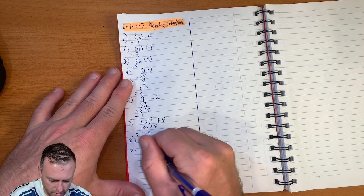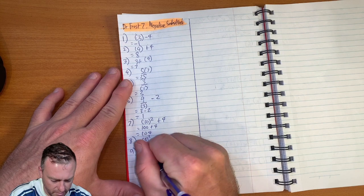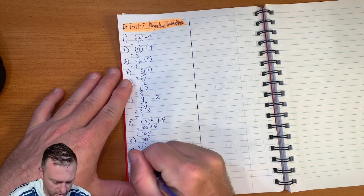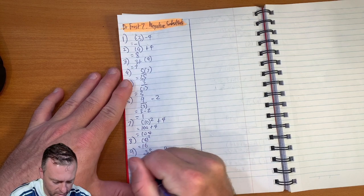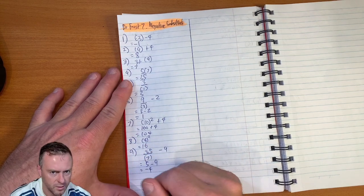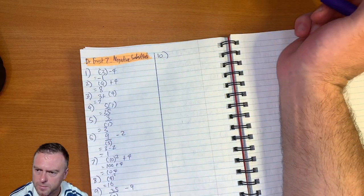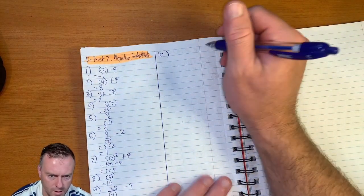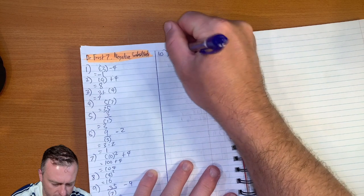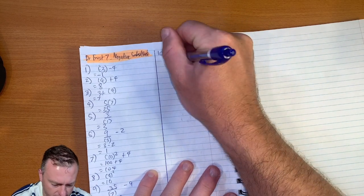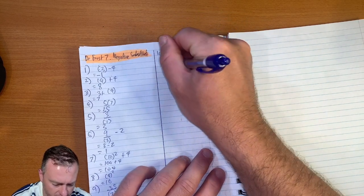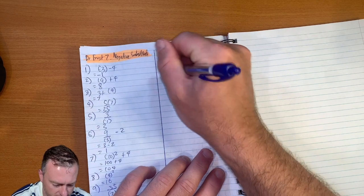Question nine. Thirty-five divided by seven, minus nine, so equals five minus nine, which equals negative four. Question ten. We've got nine squared, minus five, equals eighty-one, minus five, which equals seventy-six.